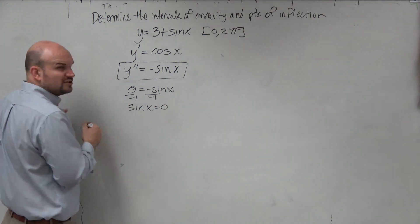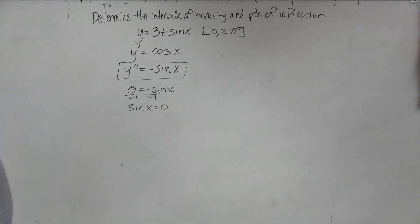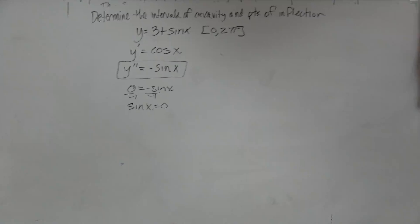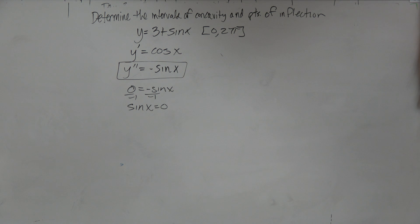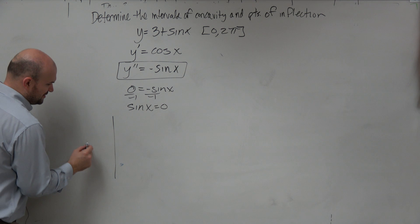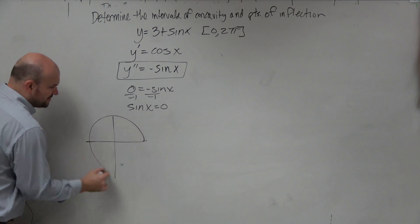And then we think of our unit circle and say, sine of x is equal to 0. That's going to be at what values? Sine of x is equal to 0 at what values? Let's go to our unit circle.